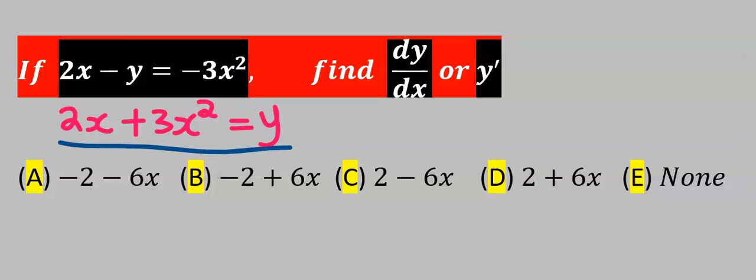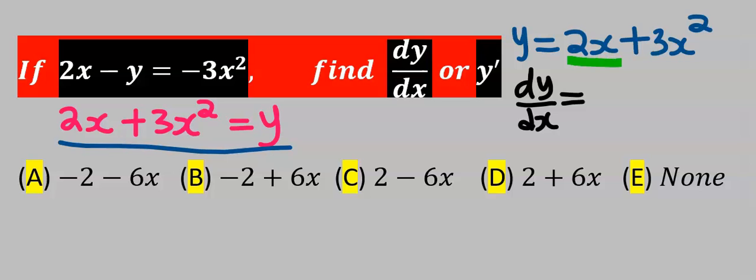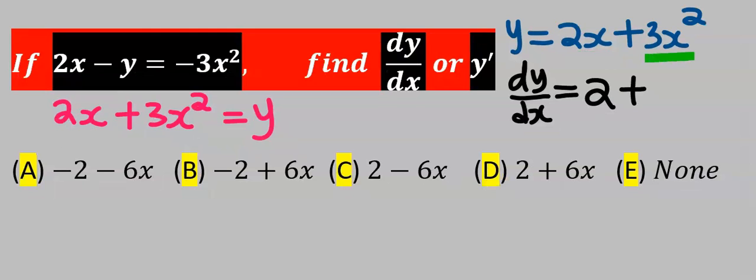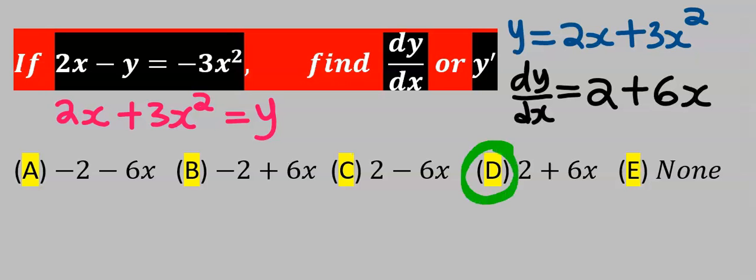Next, let's differentiate. Differentiate 2x and you're going to get 2. Next, differentiate 3x squared and you're going to get 6x, and this becomes our answer.